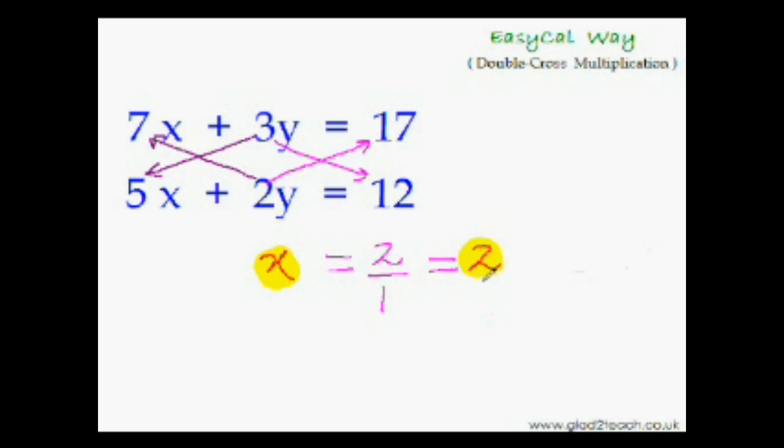And once you have value of one variable, finding the value of other variable, it is very easy. All you have to do is put this value of x in any of these two equations. Let's put it in this equation. So 5 times 2 is 10. Now 10 plus 2y is equal to 12. This means 2y is equal to 12 minus 10. 12 minus 10 is 2. And 2 divided by this 2 will be 1. So y is equal to 1.